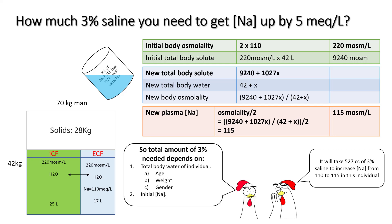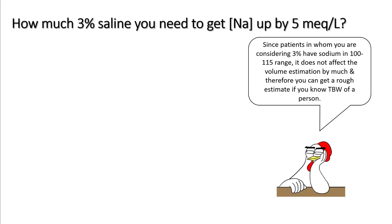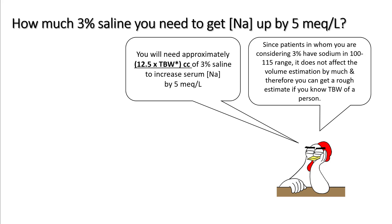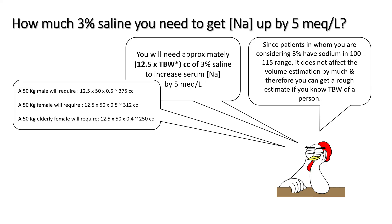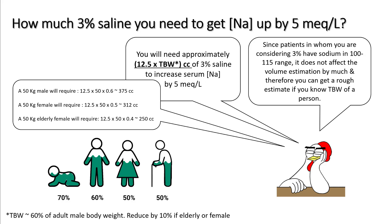The amount of 3% saline needed to raise sodium by 5 points depends on the individual's total body water and initial sodium. Total body water depends on age, weight, and gender, and you can find calculators for this. Since most patients where you're considering 3% saline have sodium in the 100–115 range, this doesn't affect the final number much. A rough estimate: multiply 12.5 by total body water. For a 50 kg male: 12.5 × (50 × 0.6) = 375 cc's.